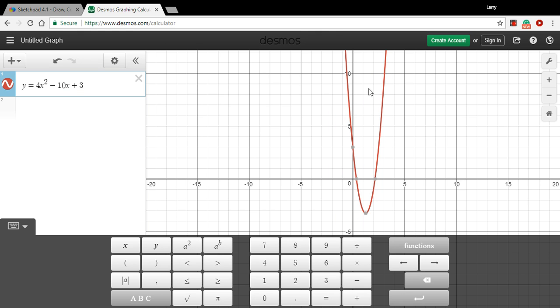Okay, so here is our parabola that's been graphed, and you can see it's already got certain points highlighted. So Desmos knows what the important points are. And all you really have to do is just hover here to see that our vertex is 1.25, negative 3.25.